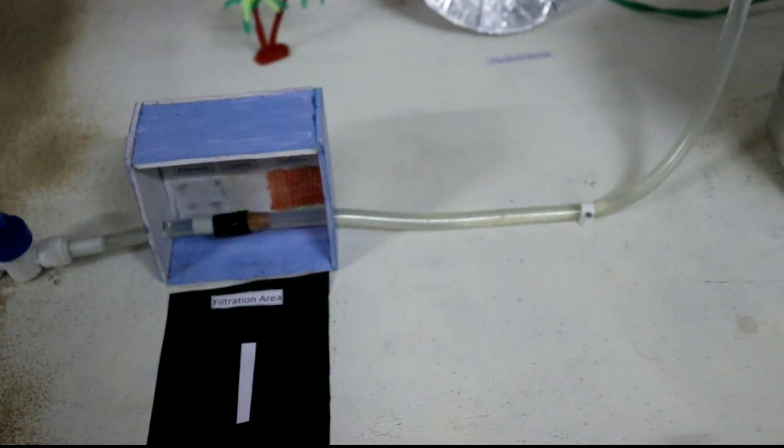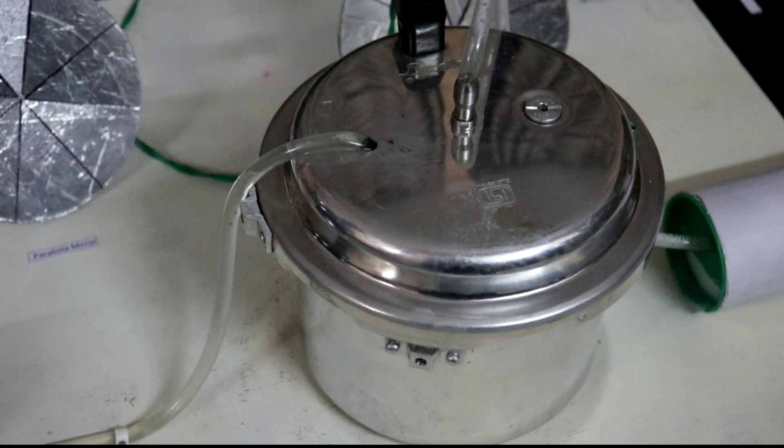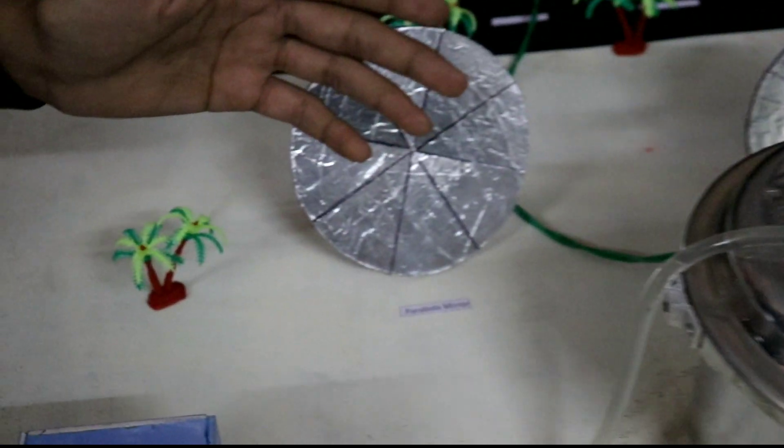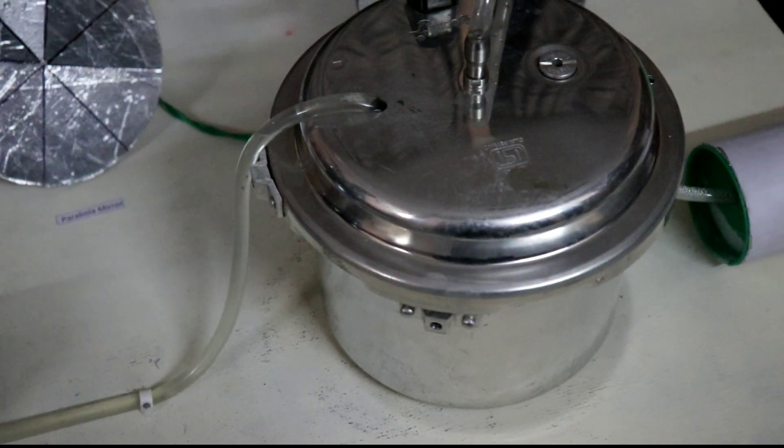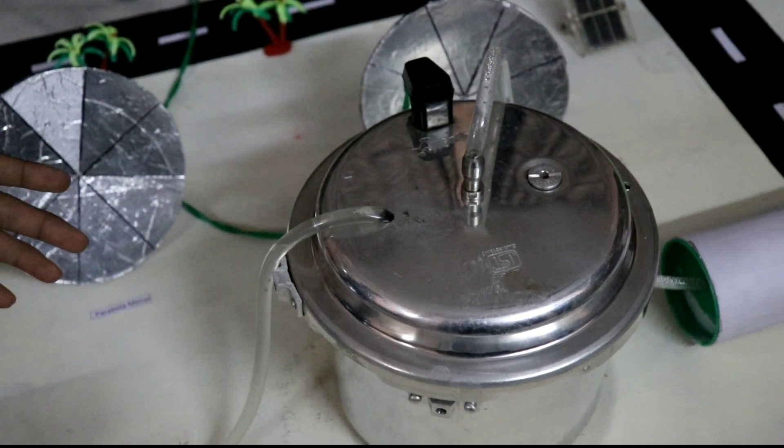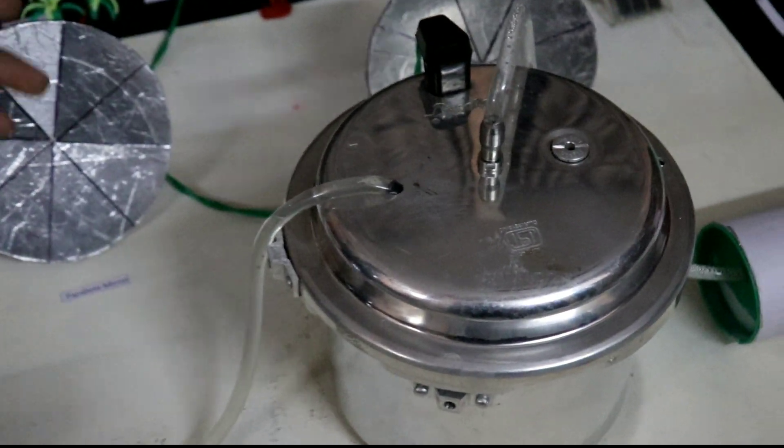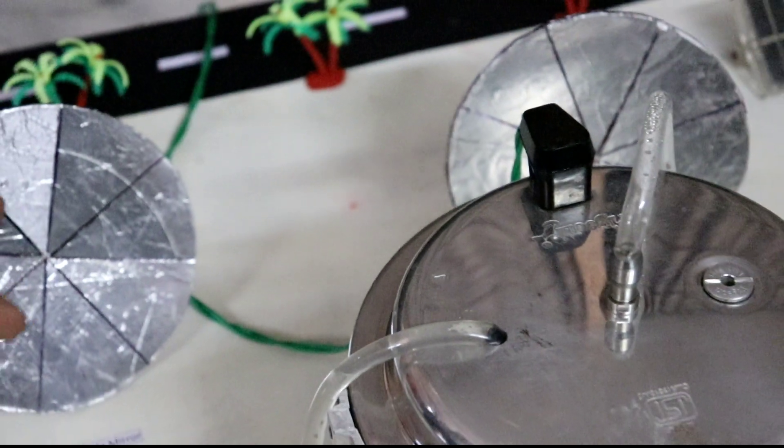This water will then be transported to the heating chamber where, using large parabolic mirrors, the water will be heated. This heating chamber will be made of copper because it will help in good insulation of heat. However, in our prototype, we have used an immersion rod because use of large parabolic mirrors in our prototype was not possible.